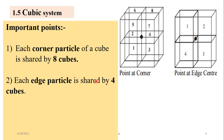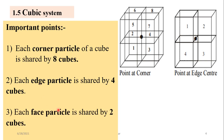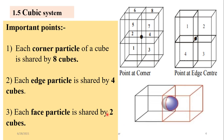Each edge particle is shared by four cubes. The particle at the edge is shared by this cube, and also by this cube, this cube, and this cube — a total of four unit cells. Each face particle, the particle present at the center of a face, is shared by two cubes. So each face particle contributes half a particle to a unit cell.